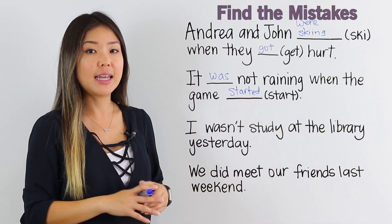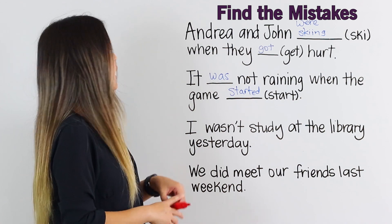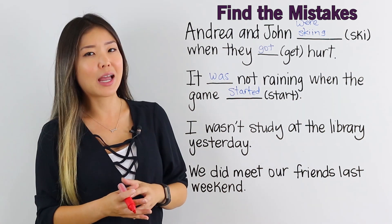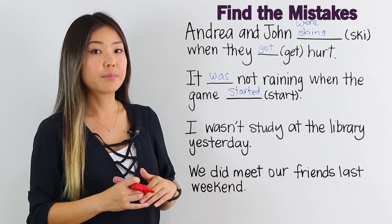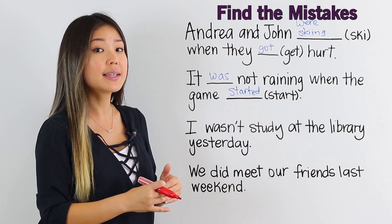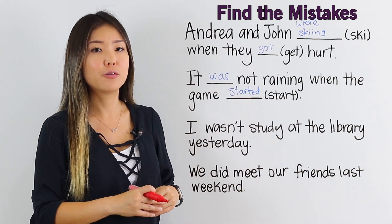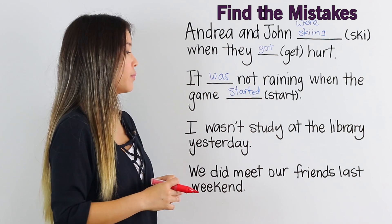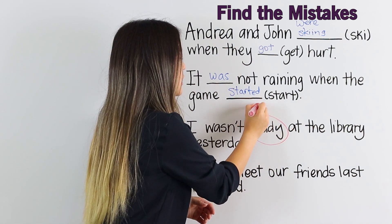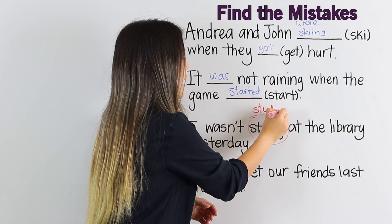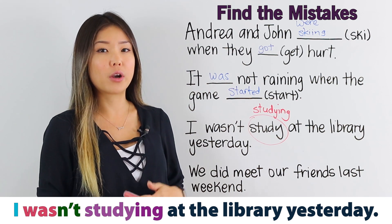Now, find the mistake in the next sentence: I wasn't study at the library yesterday. The subject is I, so the be verb was is correct — wasn't is the contraction for I was not. The problem is with the verb. Remember, we need to put –ing at the end of the verb. I wasn't studying at the library yesterday.